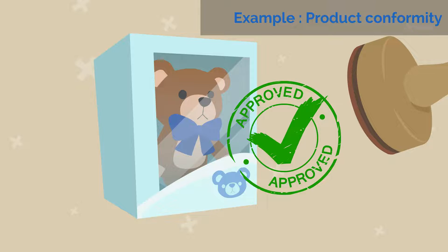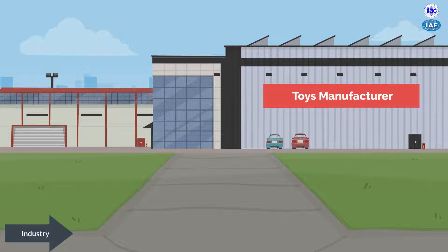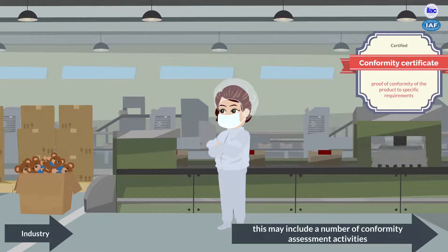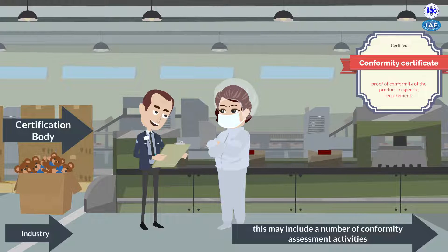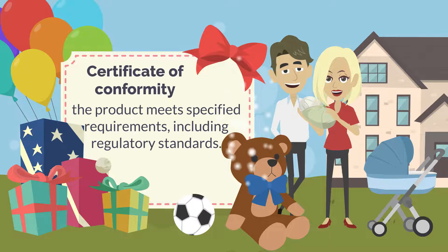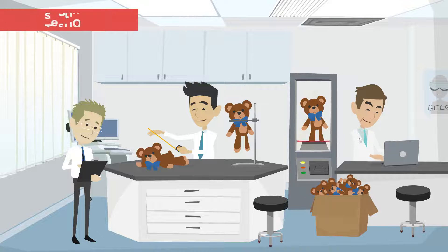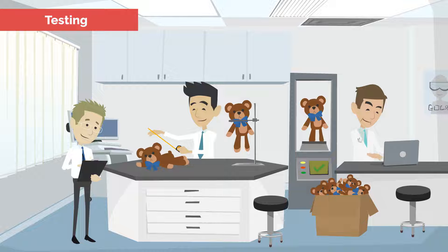Take the example of product conformity. A toy manufacturer wants to produce and export a product that is enjoyed all over the world, without having to set up multiple factories in each country. Proving the conformity of its toys to the target market requirements may include a number of conformity assessment activities. For instance, product certification may be required to ensure the product meets specified requirements, often including regulatory standards. Testing may be required as proof that the product meets certain safety and quality standards, including looking at the composition of the product and how the product behaves in certain conditions such as impact testing.